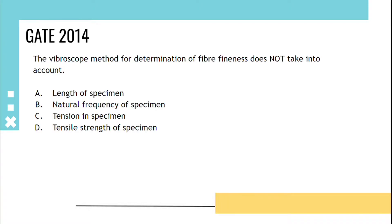We know that the formula for vibration width is tension T times 1 by 2Lf the whole square. Here length of the specimen is included, natural frequency of specimen is also included as f, and tension T is also included. So tensile strength is the exemption. Answer is tensile strength of the specimen.